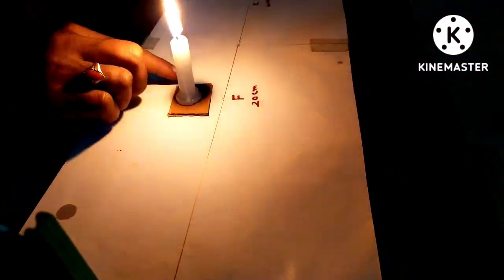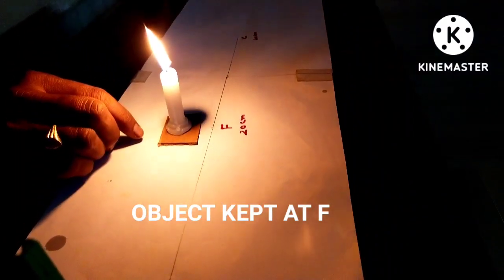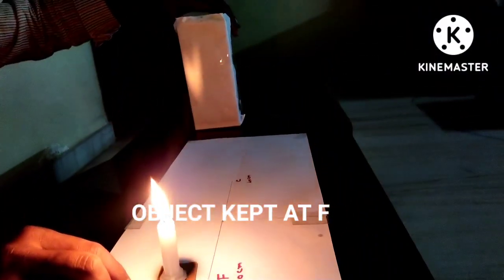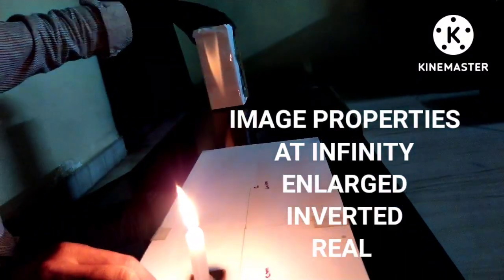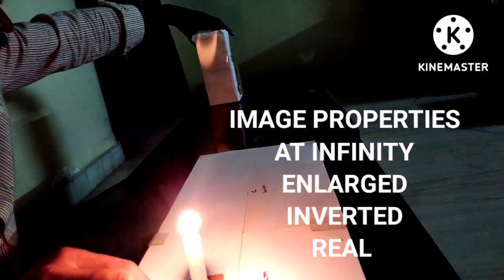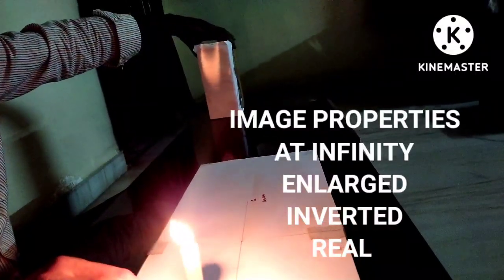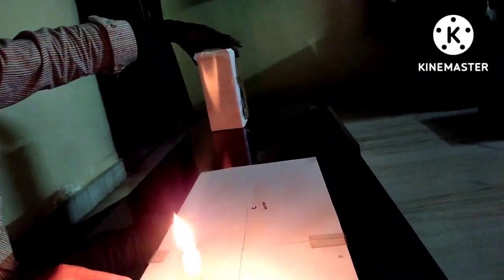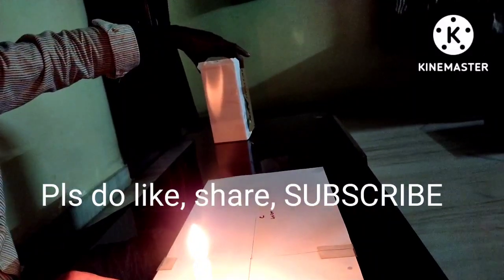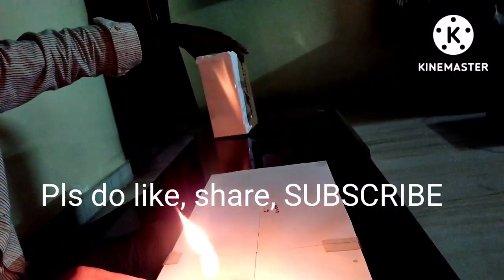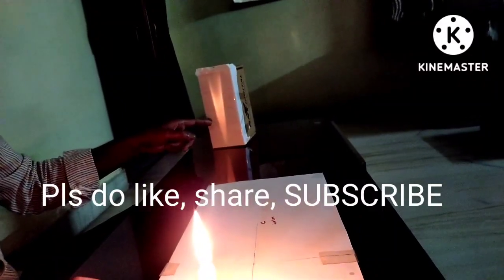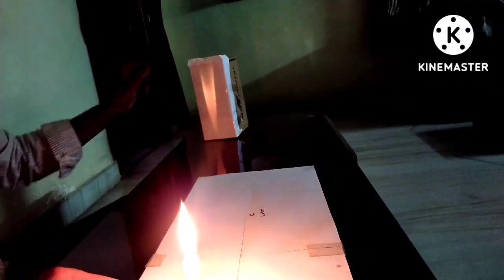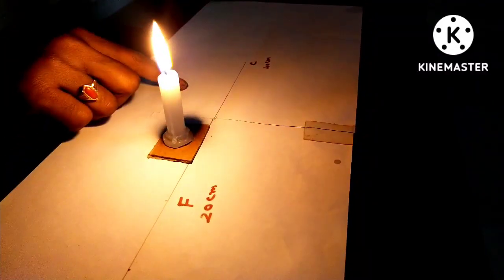Now the object kept at F, that means focal point. Adjust the screen in such a way that clear image is captured. So, at far distance, that means infinity, here you observe that image is enlarged, inverted, real.